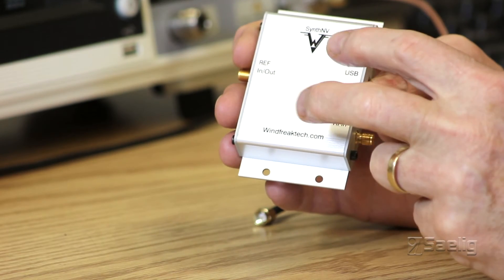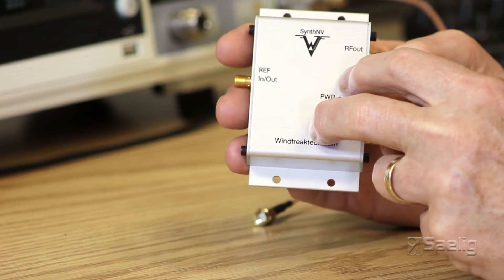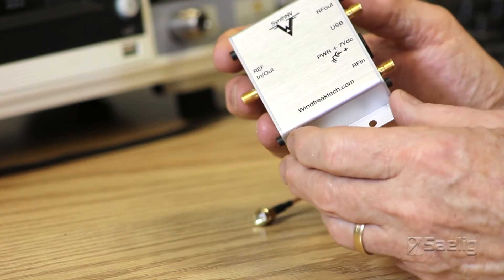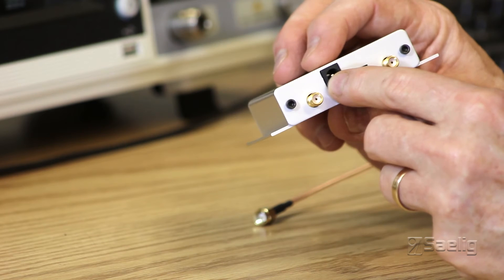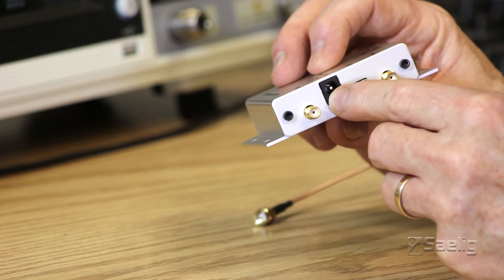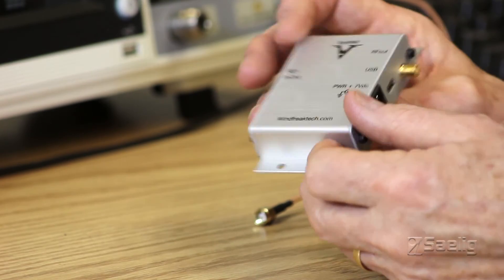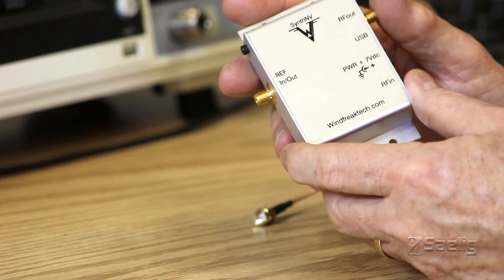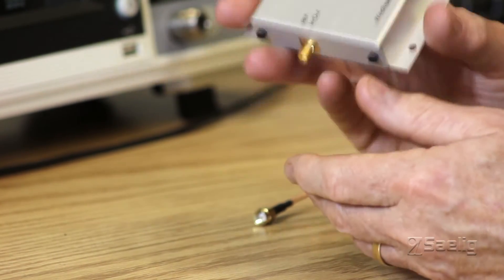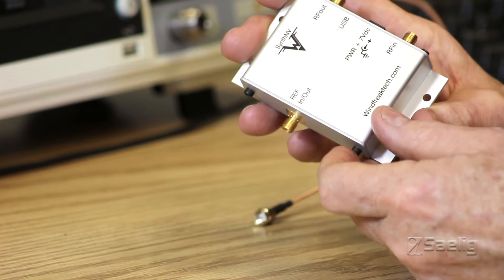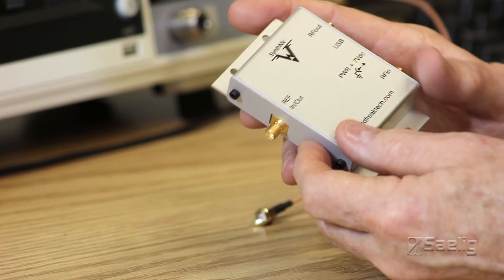is that you can load settings into the EEPROM in here and the unit will operate in a standalone mode just by powering it up through the DC input port. It'll just start up with a particular frequency and level and it'll also do modulation if you set it up that way so this device can be just a little standalone RF source inside some other system you want to build.